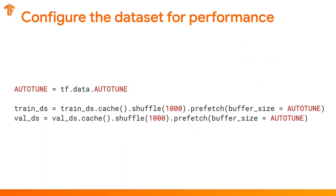Consider using buffered prefetching so you can yield data from the disk without having an input-output bottleneck. Prefetching allows you to grab the data a step ahead of when it's inputted into the model, therefore reducing the amount of time between consuming a data point and producing another. Caching allows you to store data in memory or local storage, therefore saving some operations, like file opening, from being performed every epoch. Overall, these additional preprocessing steps allow for work on the CPU and GPU to run in parallel, so your processor can prepare data while your GPU is classifying.